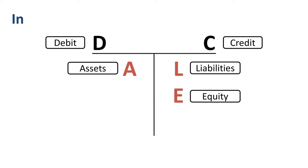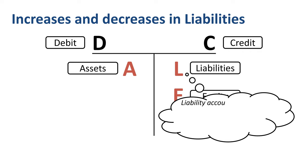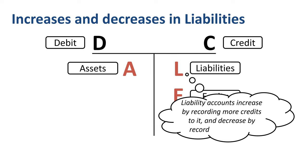Liabilities are things that a company owes. How do liabilities increase? How do liabilities decrease? The normal balance of a liabilities account is credit. Liability accounts increase by recording more credits to it, and decrease by recording debits to it.